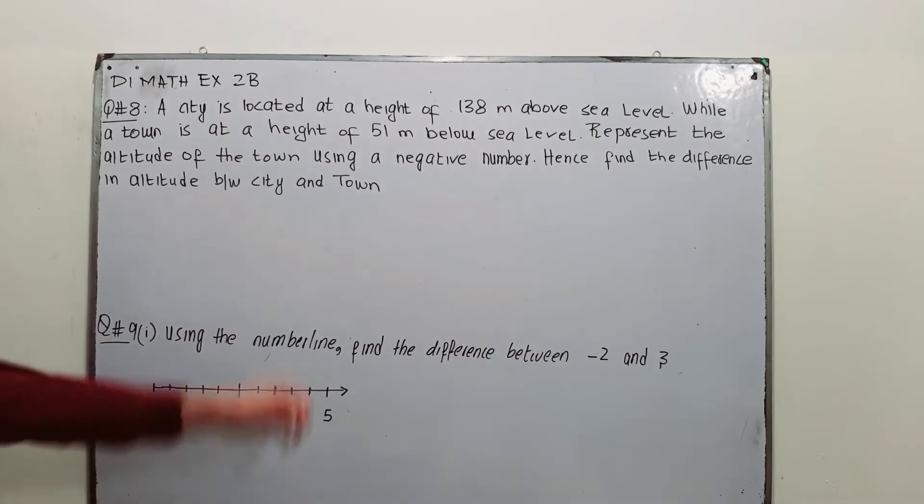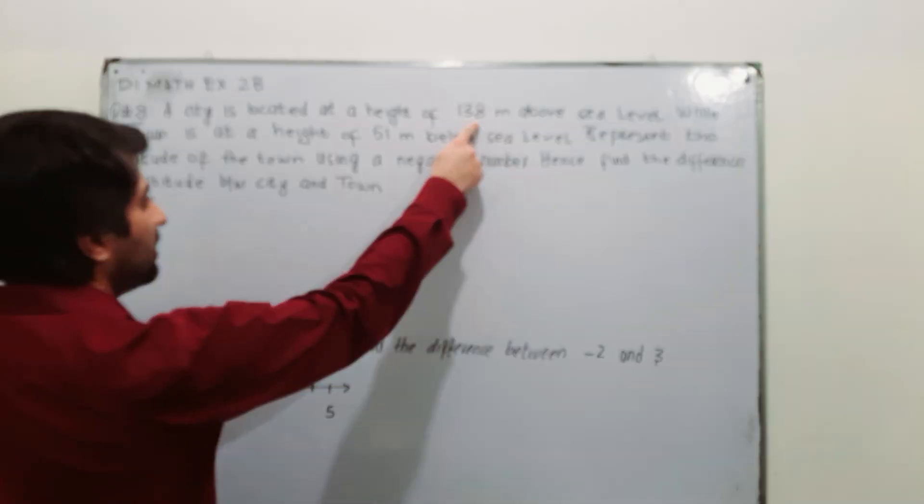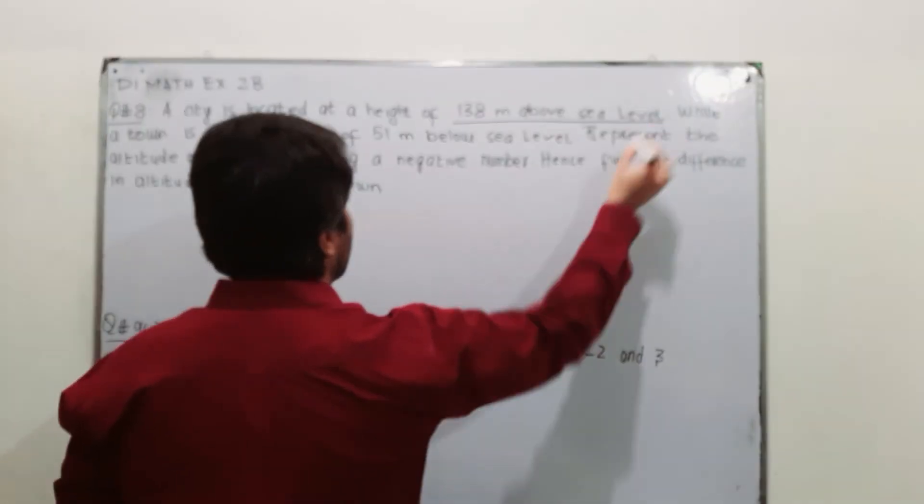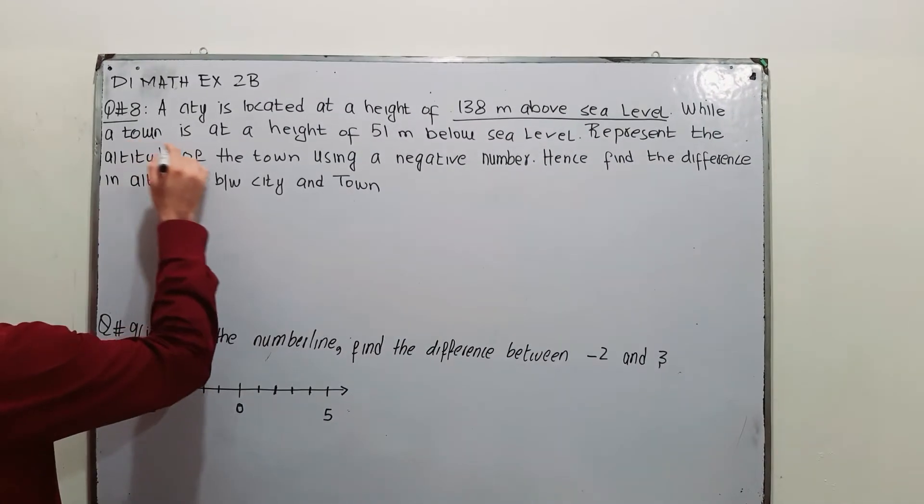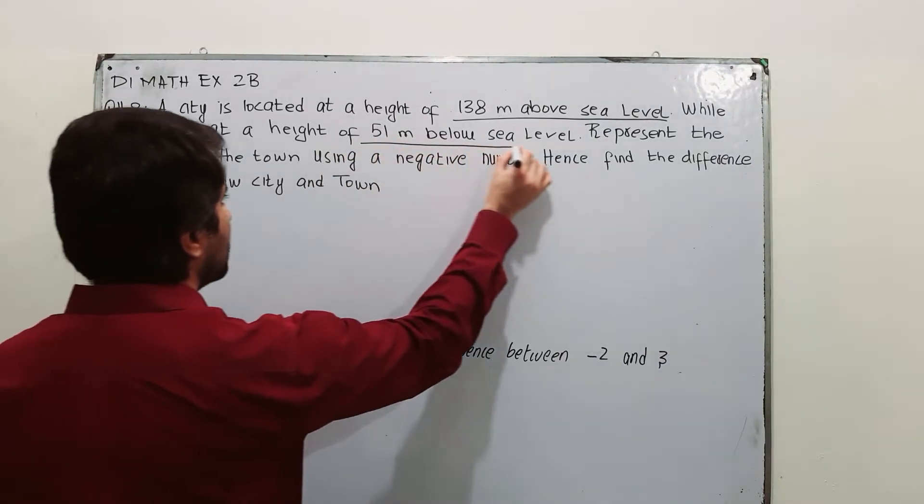Question number 8 says a city is located at a height of 138 meters above sea level, while a town is at a height of 51 meters below sea level.